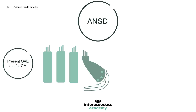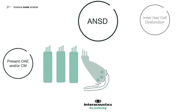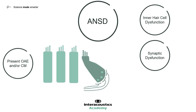As there are many more outer hair cells than inner hair cells, the cochlear microphonic response is dominated by outer hair cells, as is the OAE response. Present OAEs and/or cochlear microphonics implies only that outer hair cell function is maintained, and does not imply anything about inner hair cell function or synaptic function. It is possible that the abnormal ABR response is due to dysfunction in the inner hair cells, afferent synapses to the spiral ganglion neurons, or the nerve fibres and central pathways themselves.